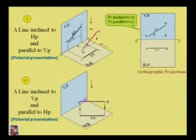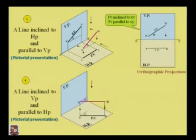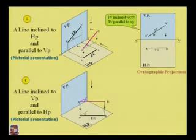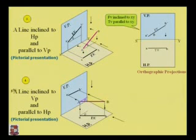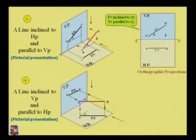First we see the top view: the projection is on the horizontal plane, and line AB from the top view will be at angle phi. When we see the front view, the projection is applied on the vertical plane and is parallel to the XY line, denoted as A-dash and B-dash.